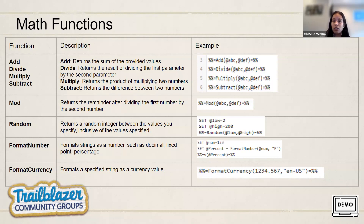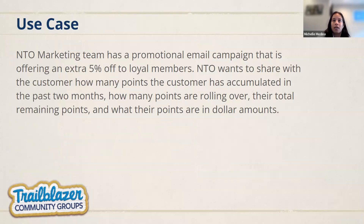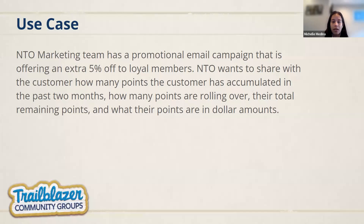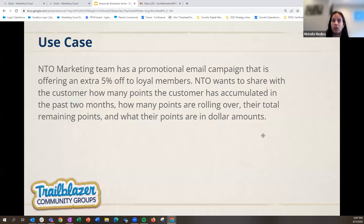Let's jump to our use case. The N2O marketing team has a promotional email campaign offering an extra 5% off to loyal members. The N2O team wants to share with customers: how many points they've accumulated in the past two months, how many points are rolling over, their total remaining points, and what their points are in dollar amounts. In N2O's business model, for every one point a customer gets, they receive 50 cents. Now we'll jump into Marketing Cloud and build this email using some of these math functions.